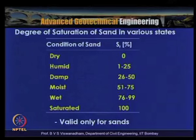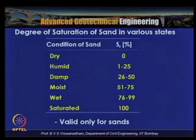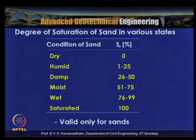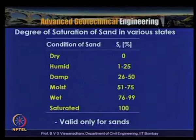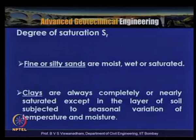The variation of degree of saturation for sands: dry SR = 0; humid 1–25%; damp 26–50%; moist 51–75%; wet 76–99%; saturated 100%. Fine or silty sands are moist, wet, or saturated. Clays are always completely or nearly saturated except in the layer of soil subjected to seasonal variation of temperature and moisture.